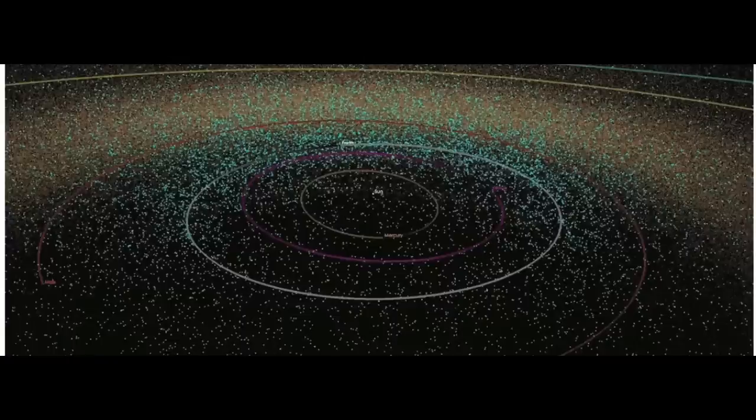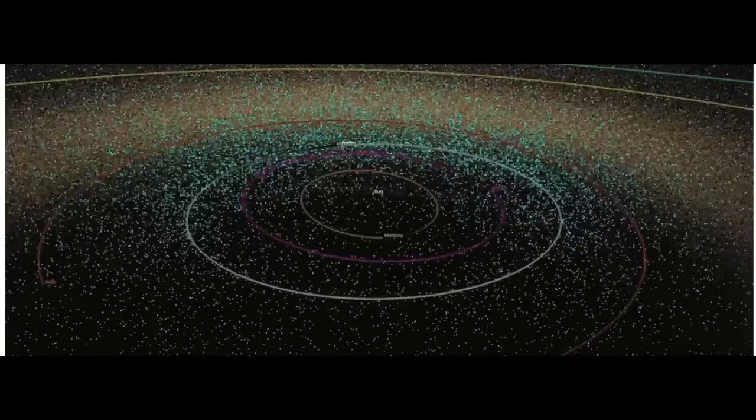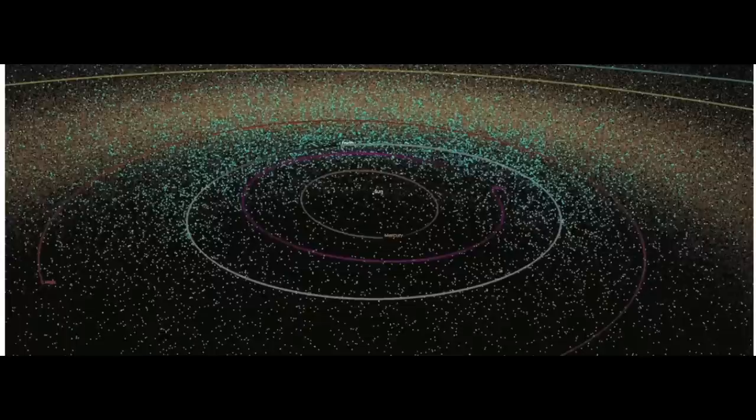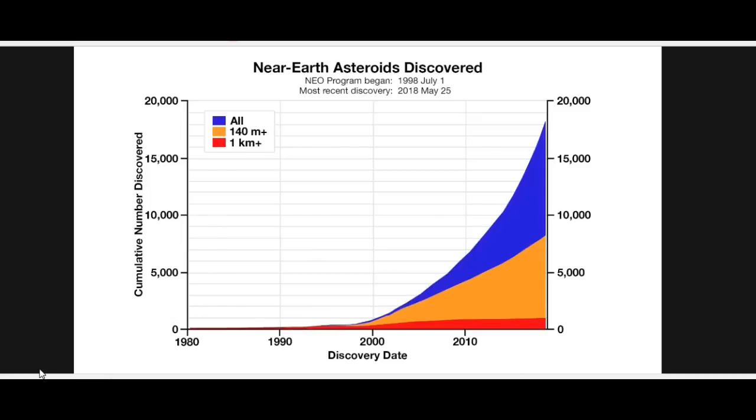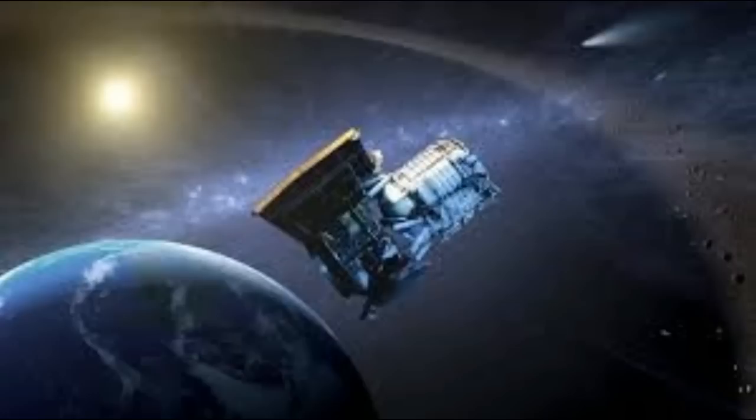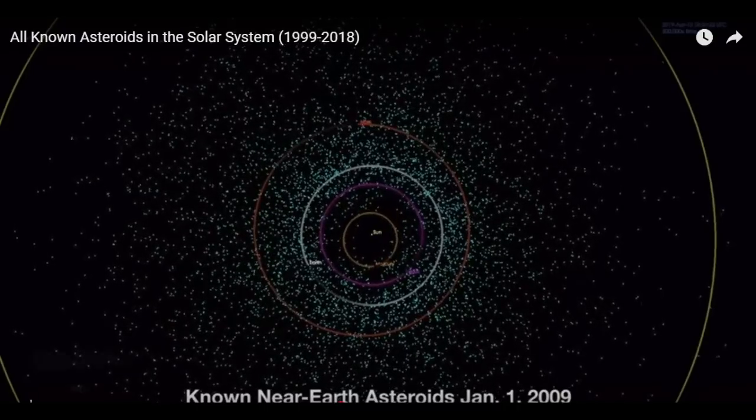They're composed mostly of water ice with embedded dust particles. Comets originally formed in the cold outer planetary system while most of the rocky asteroids formed in the warmer inner solar system between the orbits of Mars and Jupiter.